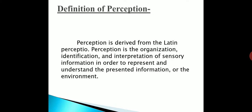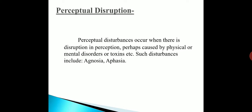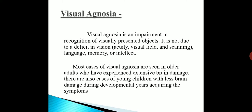Next, coming to perceptual disruption. Perceptual disturbances occur when there is disruption in perception, perhaps caused by physical or mental disorders or toxins. Such disturbances include agnosia and aphasia.